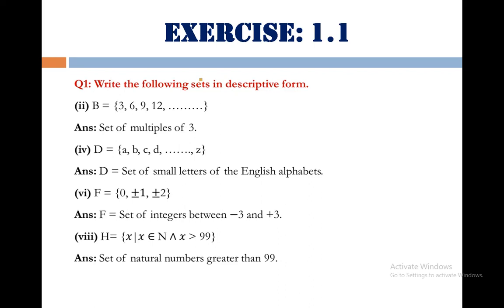Next point number 6, set F equals 0, plus minus 1, plus minus 2. We write this set F in descriptive form as set of integers between minus 3 and plus 3. You can make your answer easier by drawing the number line as well on the rough working column.